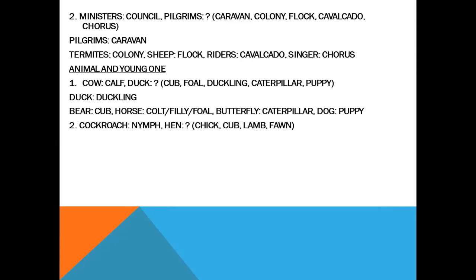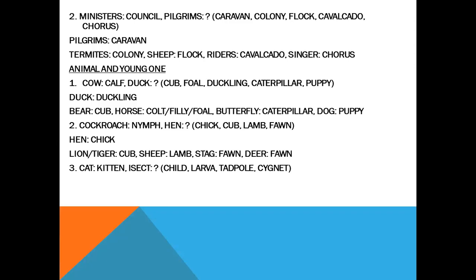Cockroach — nymph. Hen — chick. Sheep — lamb. Cat — kitten. Insect — what? Options: child, larva, tadpole, cygnet. Larva is the young one of insects. Man — child. Frog — tadpole. Swan — cygnet.